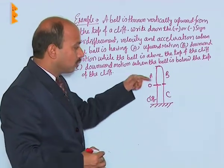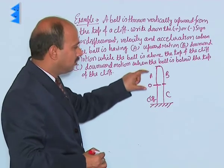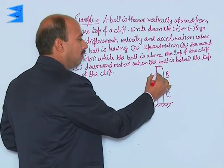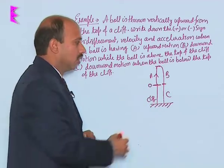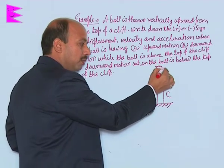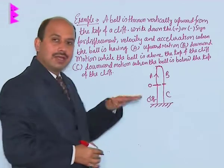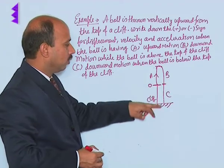We have divided the whole motion of the body into three parts: This is A when the ball is going from the top of the cliff to the maximum height. B: the ball is coming from the top of the cliff down to the level of the cliff. And then the ball is falling down.